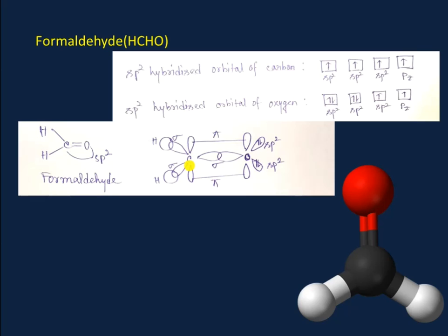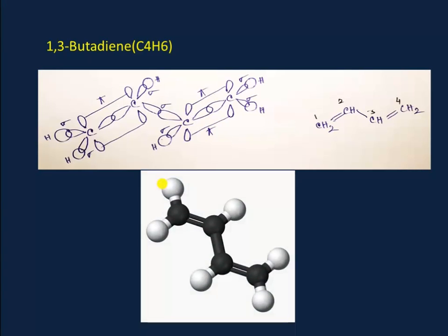Let's move on to the orbital picture of 1,3-butadiene, that is C4H6. In 1,3-butadiene, all carbon atoms are sp2 hybridized. C2 and C3 carbon atoms overlap to form a sigma bond, while C1 and C2 overlap to form one sigma bond and one pi bond, and again C3 and C4 overlap to form one pi bond and one sigma bond. Here is the 3D expression.